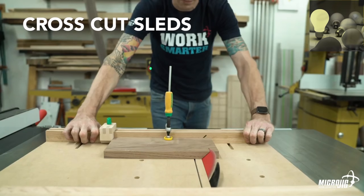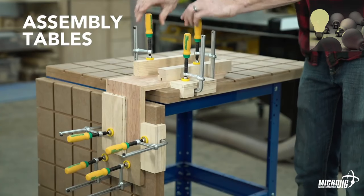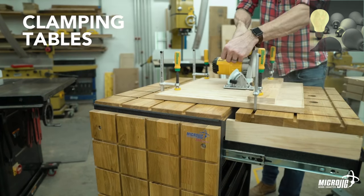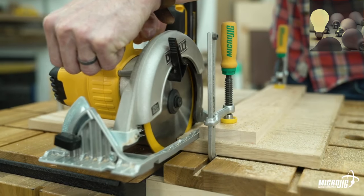Make auxiliary fences, sleds, stops, hold downs, assembly tables. You can even transform your tool chest or existing workbench into a versatile clamping surface easily and without expensive aluminum tracks.